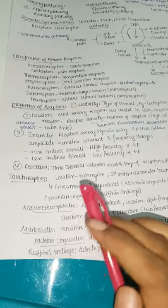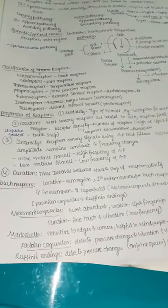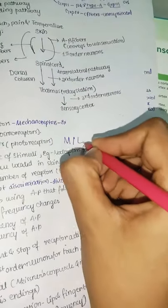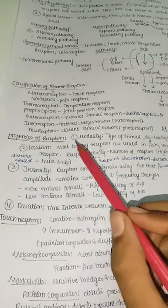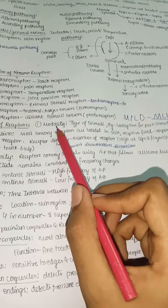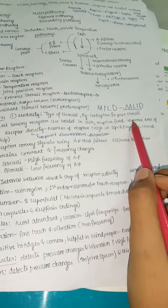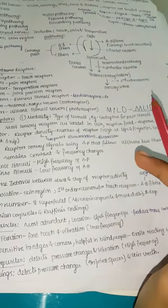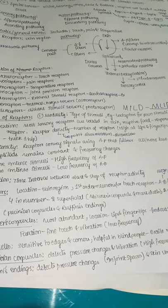Properties of receptors can be remembered by the mnemonic MLID: Modality — the type of stimuli a receptor responds to (nociceptors for pain, mechanoreceptors for touch); Location — most sensory receptors are located in the skin; receptive field — the response area surrounding the receptor within which a stimulus must fall for the receptor to respond.